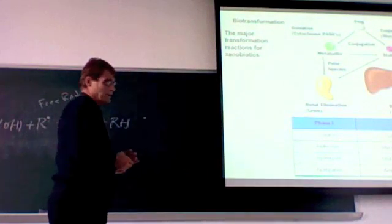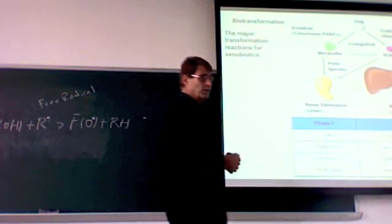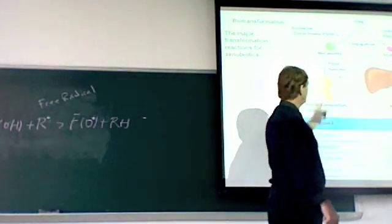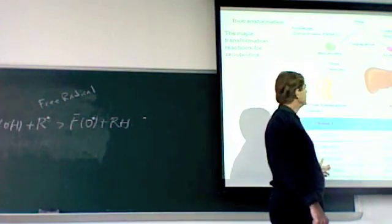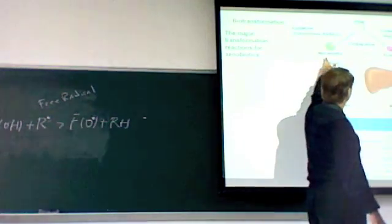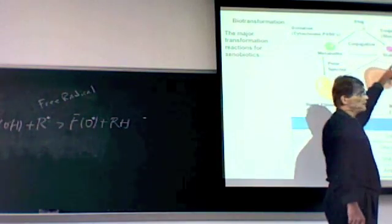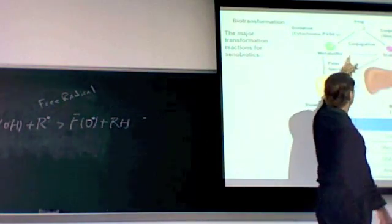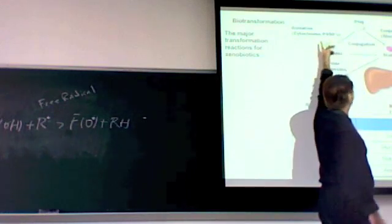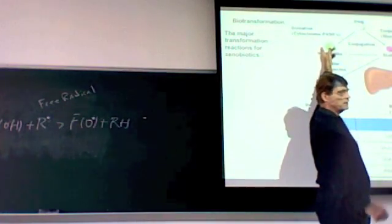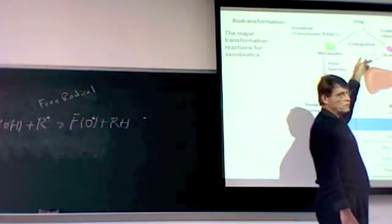So sometimes we can just get rid of this toxin with one single enzyme, a phase one enzyme. But oftentimes we take the phase one enzymes and then do phase two enzyme reactions. Phase one, mostly oxidation. Phase two, mostly conjugation.